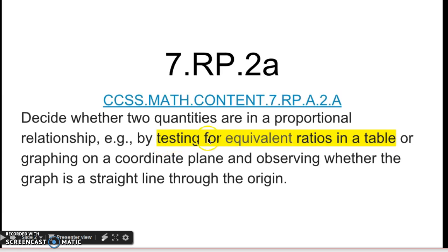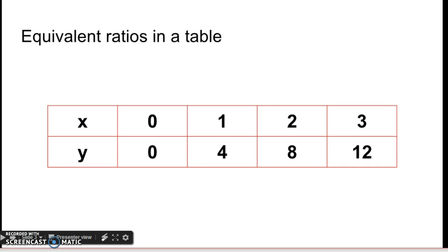So first we're going to look at testing for equivalent ratios in a table. Here's a table, x and y. It's proportional. It starts at 0, 0 and goes up by 1, 2, 3, then 4, 8, 12. So it's going up by a constant rate. We're going to test for equivalency.